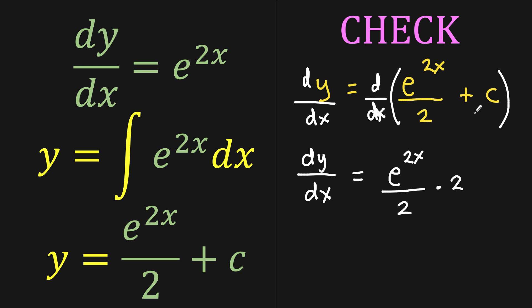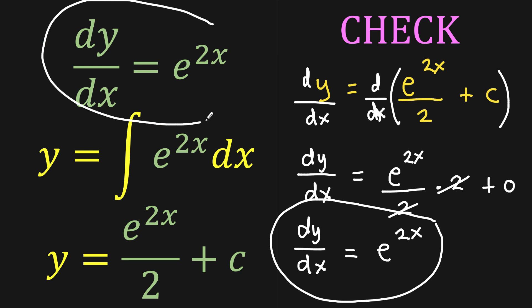So the derivative of 2x is 2, and the derivative of a constant is, of course, 0. So finally, we have dy over dx equals 2 divided by 2 is 1, so e raised to 2x. And notice that this is exactly what we have at the start, so it's verified that our answer is correct. So our final answer to this differential equation is y equals e raised to 2x over 2 plus c. That's the answer to our homework.